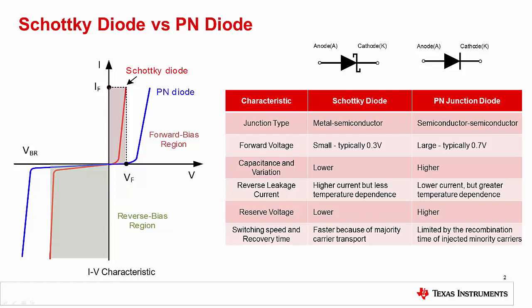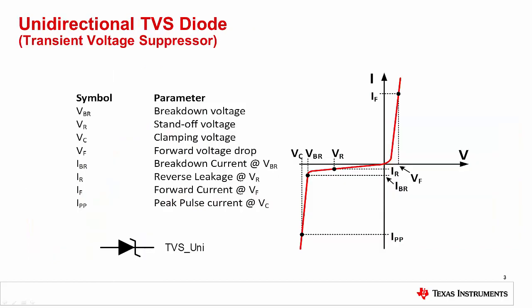Also keep in mind that any leakage current that passes through an impedance will generate an offset voltage. One of the most common devices used for protecting circuits from EOS damage is the transient voltage suppressor diode, or TVS diode.